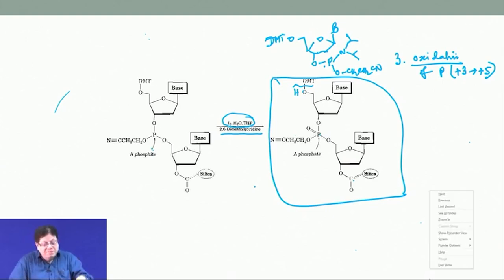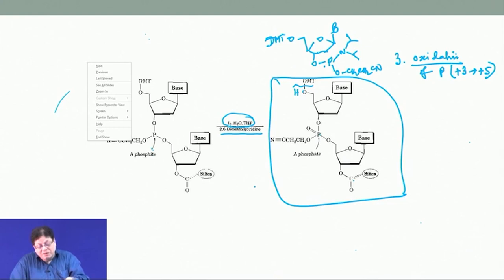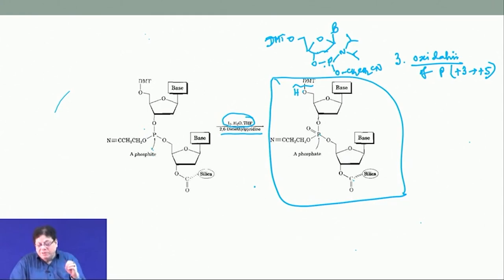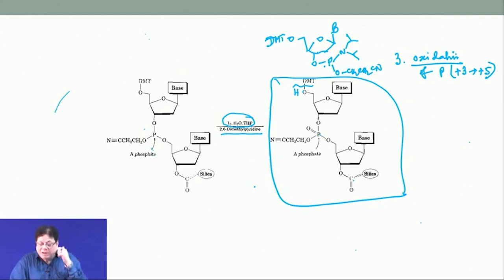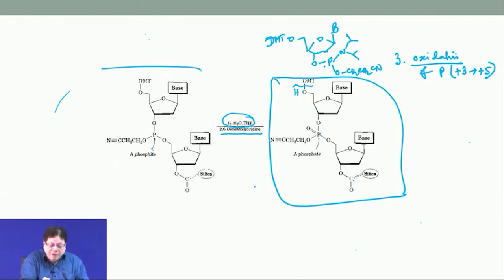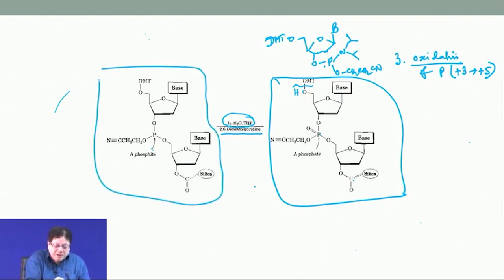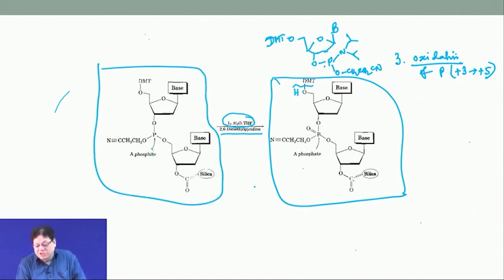To repeat the cycle: start with a DMT-protected nucleoside with the 3′ OH attached to a solid surface; remove the DMT to add the next phosphoramidite — where the 5′ OH is protected as DMT and the 3′ OH bears the phosphoramidite; after coupling, oxidize the phosphorus to the correct oxidation state.